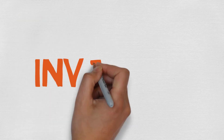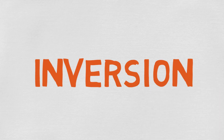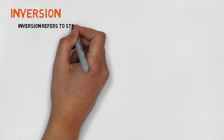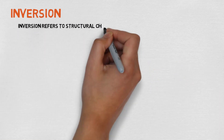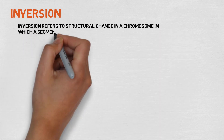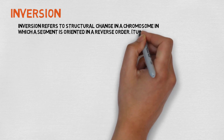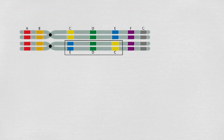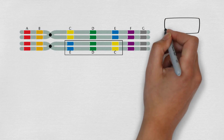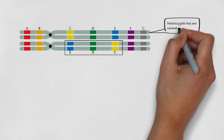The next topic is inversion. What happens in inversion? A segment of the chromosome gets inverted or turned 180 degrees — that is, a part of the chromosome rotates 180 degrees and its sequence becomes reversed.